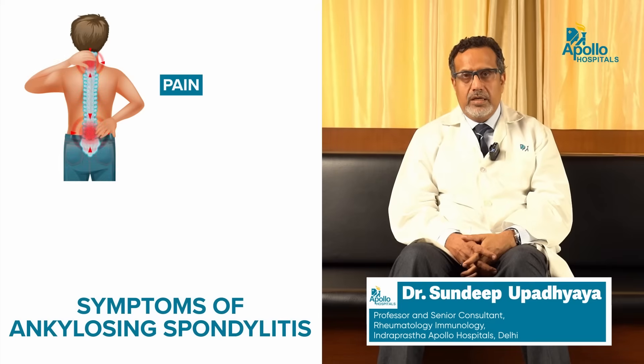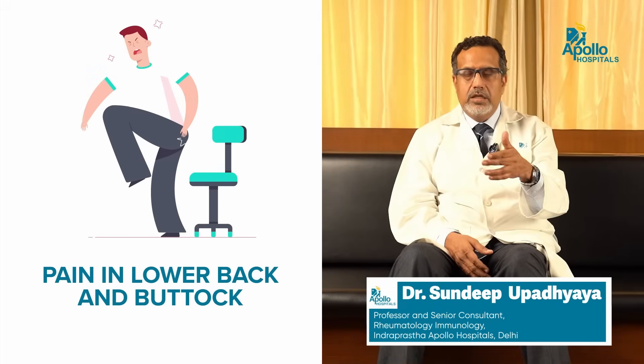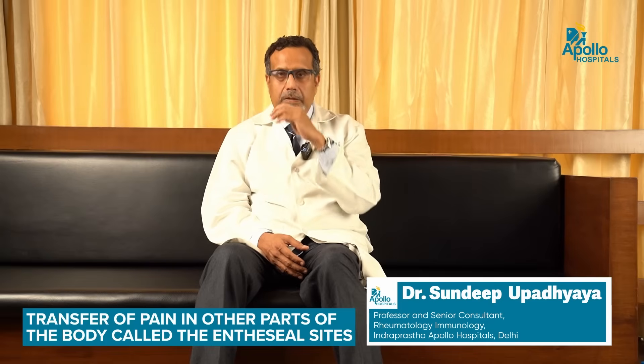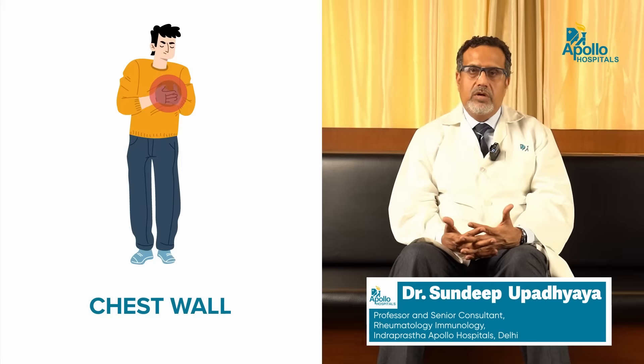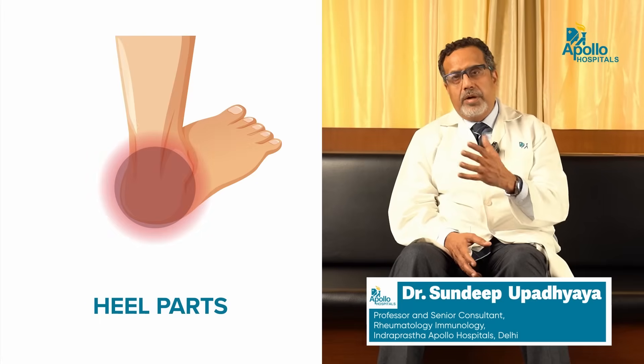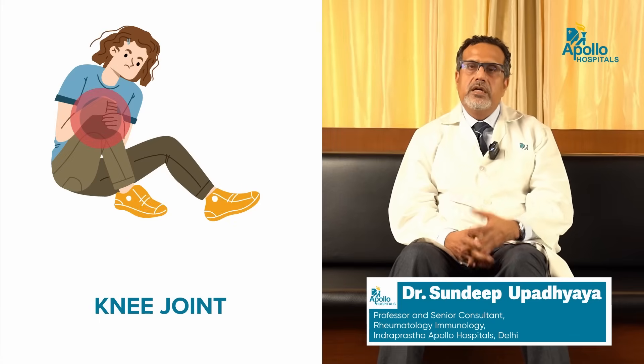The symptoms of AS are pain and stiffness. Most of the time the pain is centered around the lower back and the buttock early in the disease. Subsequently, there will be pain in other parts of the body called enthesial sites — the chest wall, the back of the heel, and parts of tendon insertion around the heel or the knee joint. These are associated with swelling and redness, sometimes with unbearable pain.